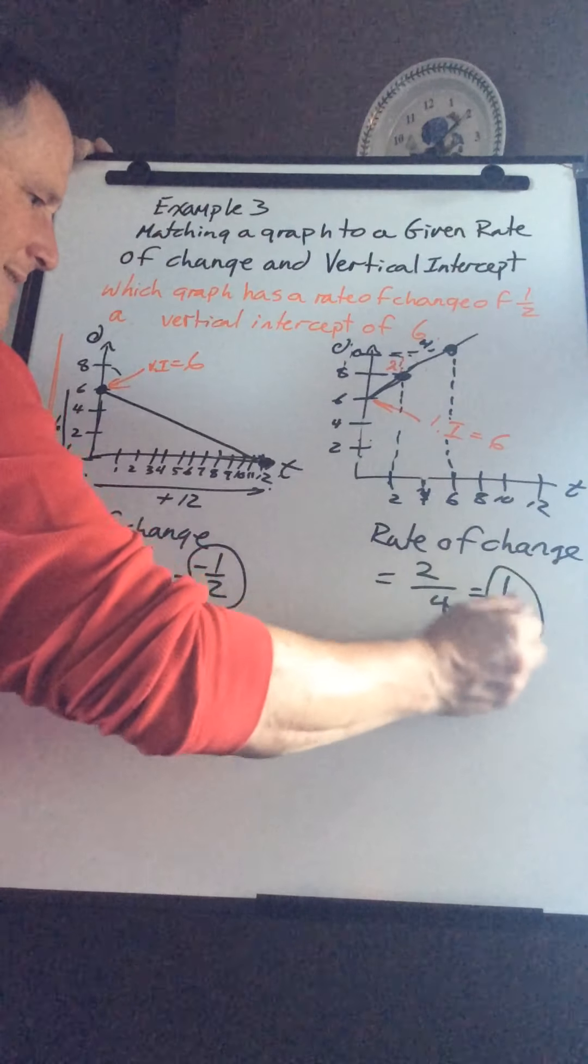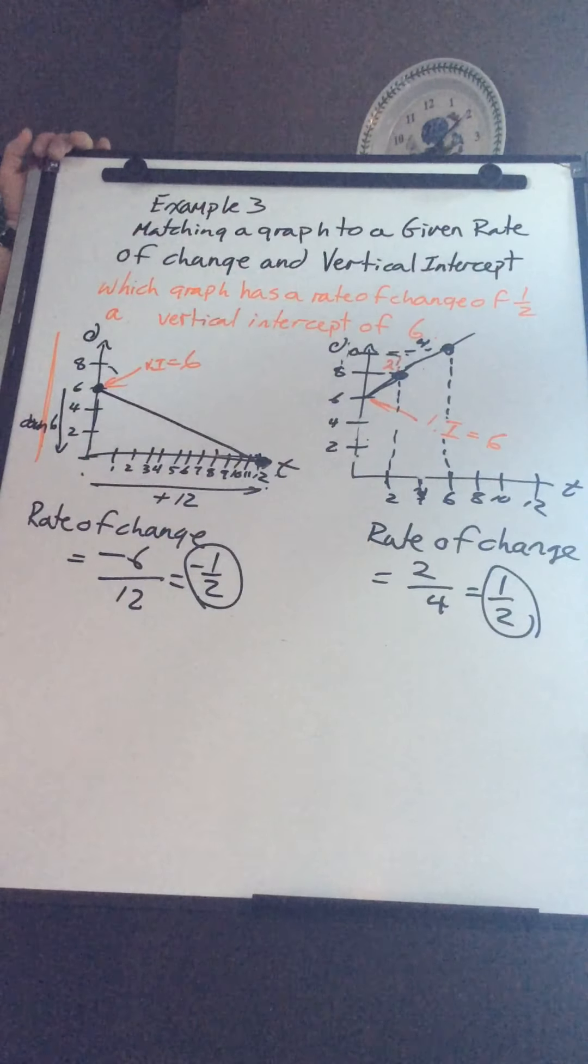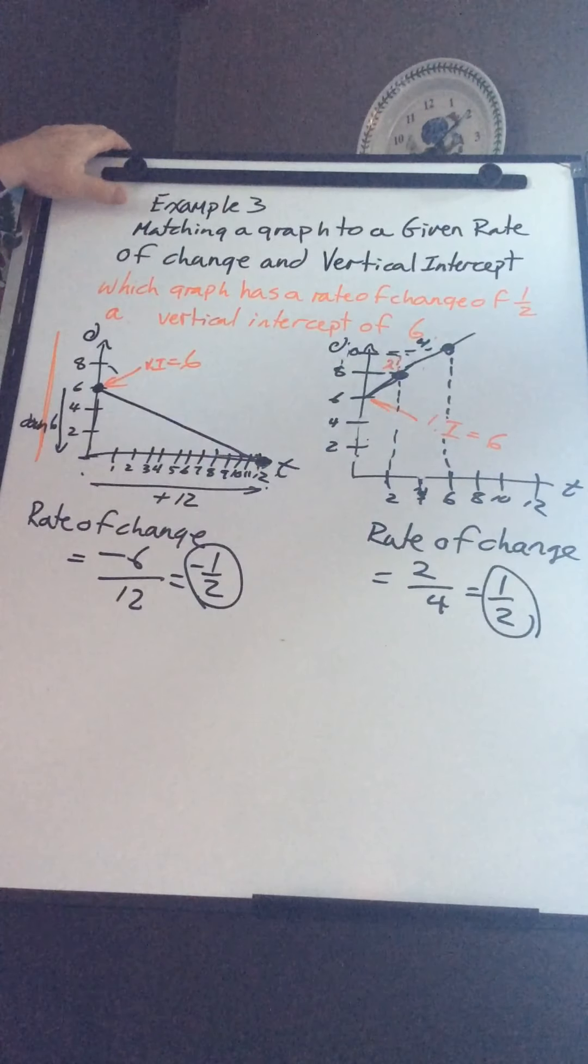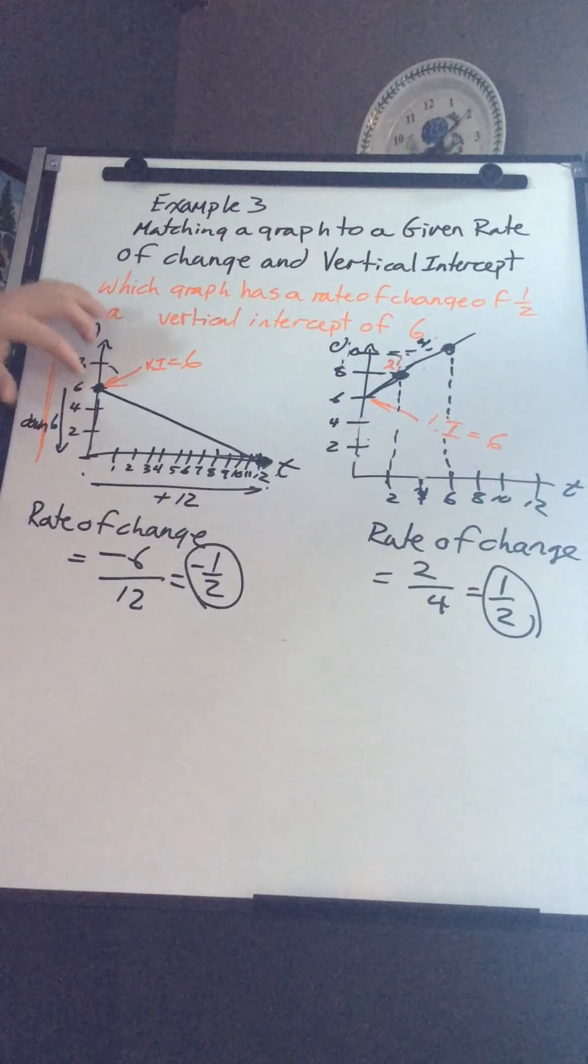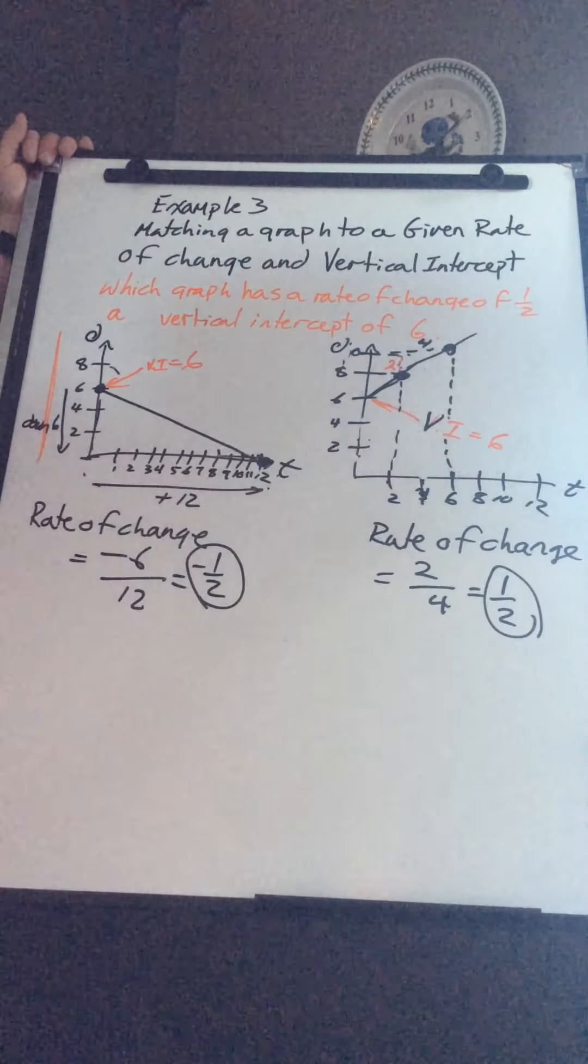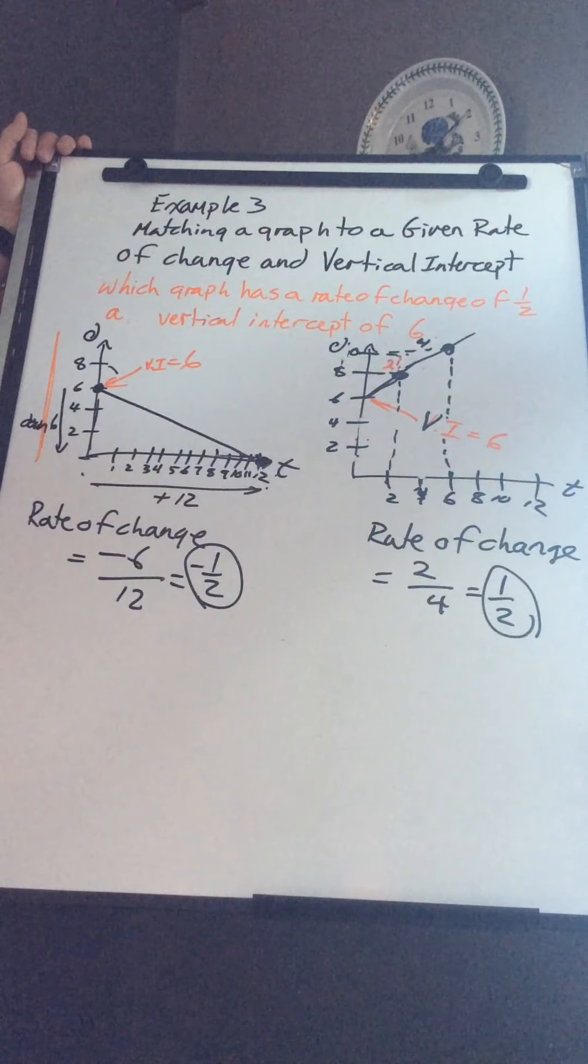Remember, that's the positive one-half. So matching a graph to a given rate of change and a vertical intercept, vertical intercept is the place where it crosses the y-axis. In both cases, we had a vertical intercept of six.